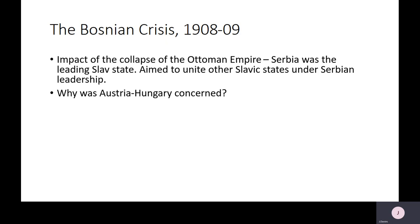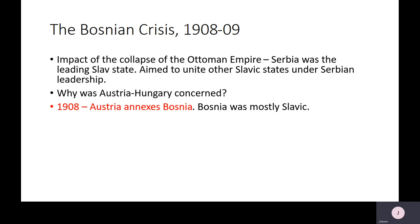Austria-Hungary was very concerned about this. You may remember that Austria-Hungary was made up of lots of different ethnic groups — it was a multi-ethnic empire. As well as Austrians and Hungarians, there were Serbs, Poles, Czechs and Slovaks — peoples we now recognise as having their own independent countries. Austria-Hungary was very concerned that if Serbia managed to unite other Slavic states around it, nothing would stop other nationalities within Austria-Hungary from seeking the same. So Austria-Hungary wanted to control Serbia as a way of controlling nationalism within its own empire. In 1908, Austria annexed Bosnia — which was mostly Slavic — and this made the Serbs very angry.